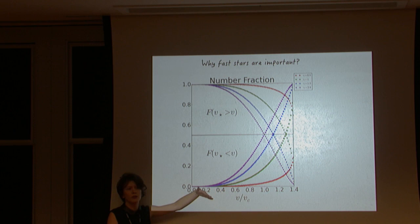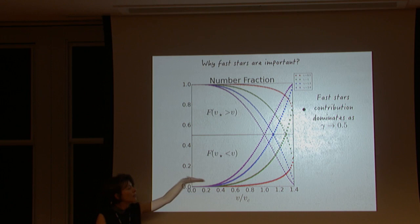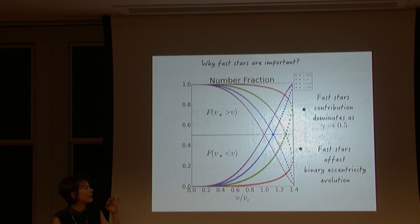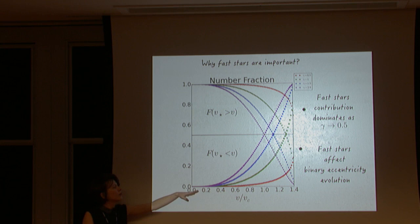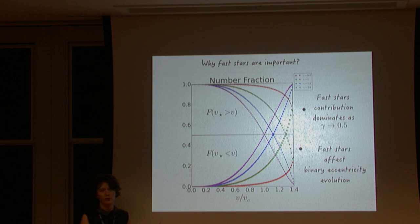Fast stars contribute more and more as I go to shallower profiles. The second important point is that this contribution affects the eccentricity evolution of the binary, because what matters for eccentricity evolution is the relative contribution of dynamical friction near apoapsis and near periapsis. This is why the fast star contribution is key to how the eccentricity of the binary evolves.